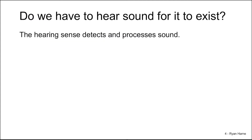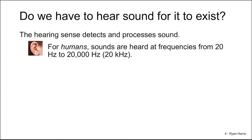Now that we understand acoustics and sound, do we have to hear sound for it to exist? It's the hearing sense that detects and processes sound, and for humans, this hearing sense detects sounds with frequencies from 20 hertz to 20,000 hertz, also written as 20 kilohertz. A hertz is a cycle per second, so this means that humans hear from 20 cycles per second to 20,000 cycles per second.